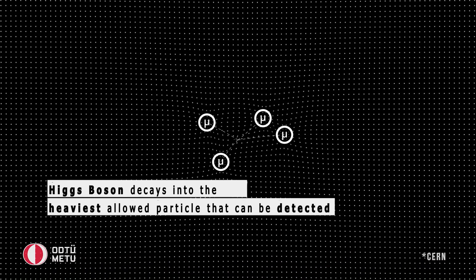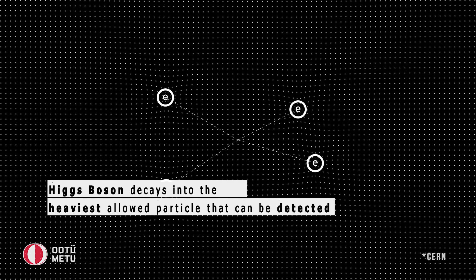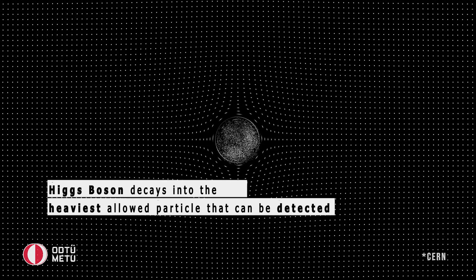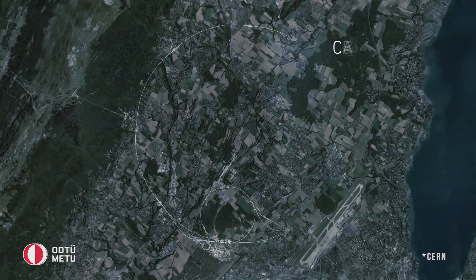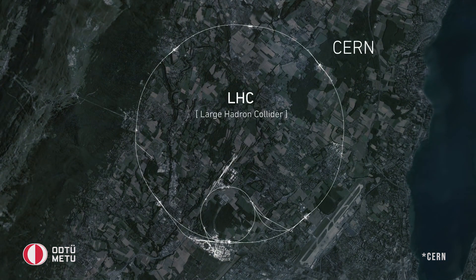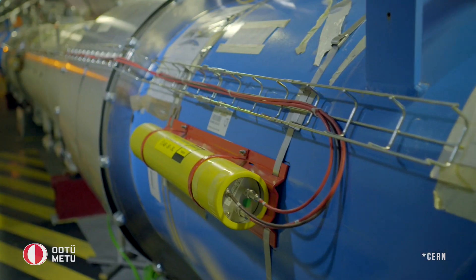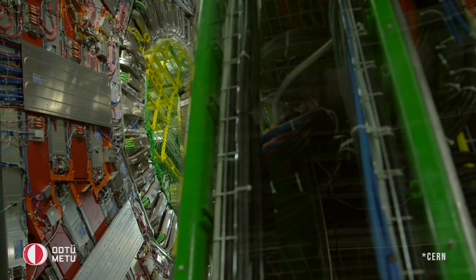The Higgs boson can be created in a particle collision, and once produced, decays to the heaviest allowed elementary particle that can be detected in particle detectors. But our particle collision technology was not good enough to detect these particles, and we had to wait until 2008 for CERN to build the Large Hadron Collider, which is the world's largest and most powerful particle accelerator. LHCb, ALICE, ATLAS, and CMS were the four big particle detectors located at specific points of the Large Hadron Collider.